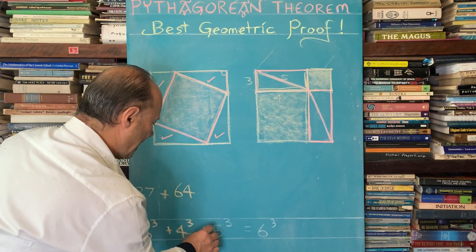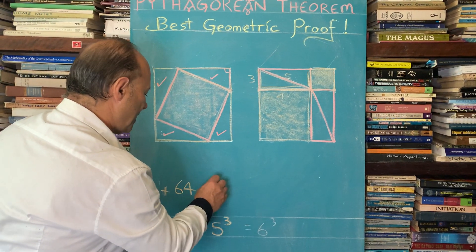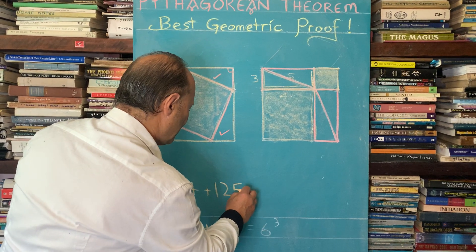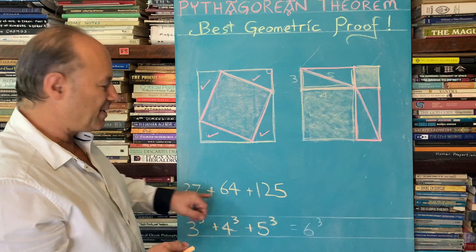And then I'm even going to add five cubed, so if we put all these together, five cubed is 125.